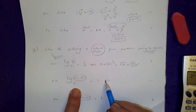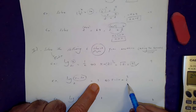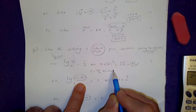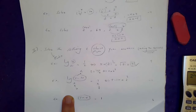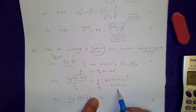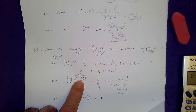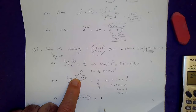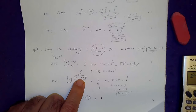For the next problem, the logarand is 5 minus 3x, the base b is 2, and the value of the log is 3. Using the conversion formula from logarithmic to exponential form, 5 minus 3x equals 2 to the power of 3, which is 8. So negative 3x equals 3, and x equals negative 1. Before boxing the answer, check that the logarand is not 0 or negative: substituting x = negative 1, negative 3 times negative 1 is positive 3, and 5 plus 3 is 8 — positive, so it's okay.